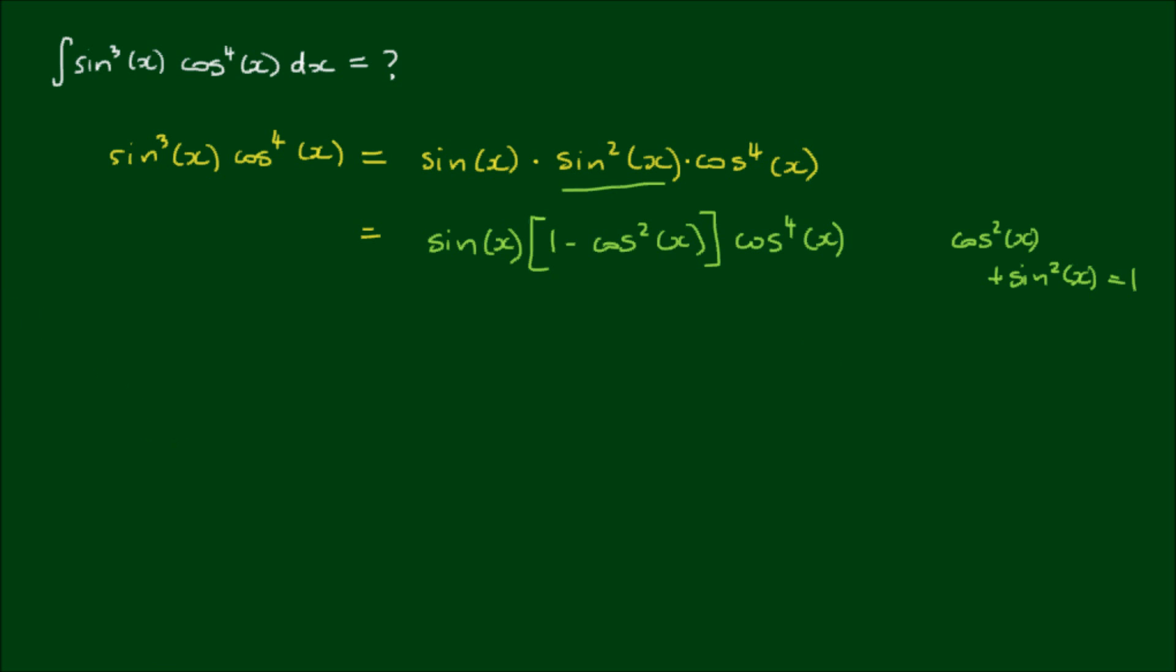Now here's a little trick that we can use to simplify this expression even further. Let's let u equal cos(x). Then the differentiation of this, so du/dx is equal to negative sin(x). And then I can rearrange this to say that negative du is equal to sin(x)dx.